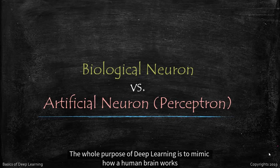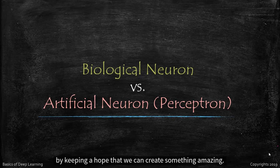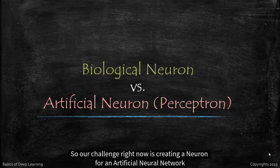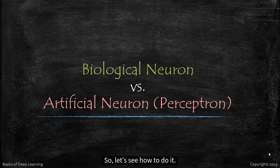The whole purpose of deep learning is to mimic how a human brain works by keeping a hope that we can create something amazing. So our challenge right now is creating a neuron for an artificial neural network.